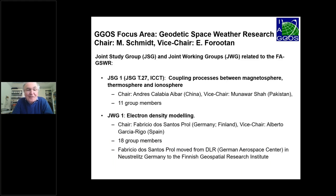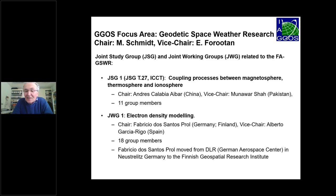Now I come to the different study groups and working groups — we have altogether four. The first is a joint study group related to the Intercommission Committee on Theory: coupling processes between magnetosphere, thermosphere, and ionosphere, chaired by Andres Calabia-Urquijo, with vice chair Munabha Shah from Pakistan — eleven group members. The second is electron density modeling, chaired by Fabricio Dos Santos-Prol, with vice chair Alberto Garcia-Rigo from Spain — 18 group members. Fabricio has moved from DLR in Neustrelitz to Finland, where he is now working for the Finnish Geospatial Research Institute.